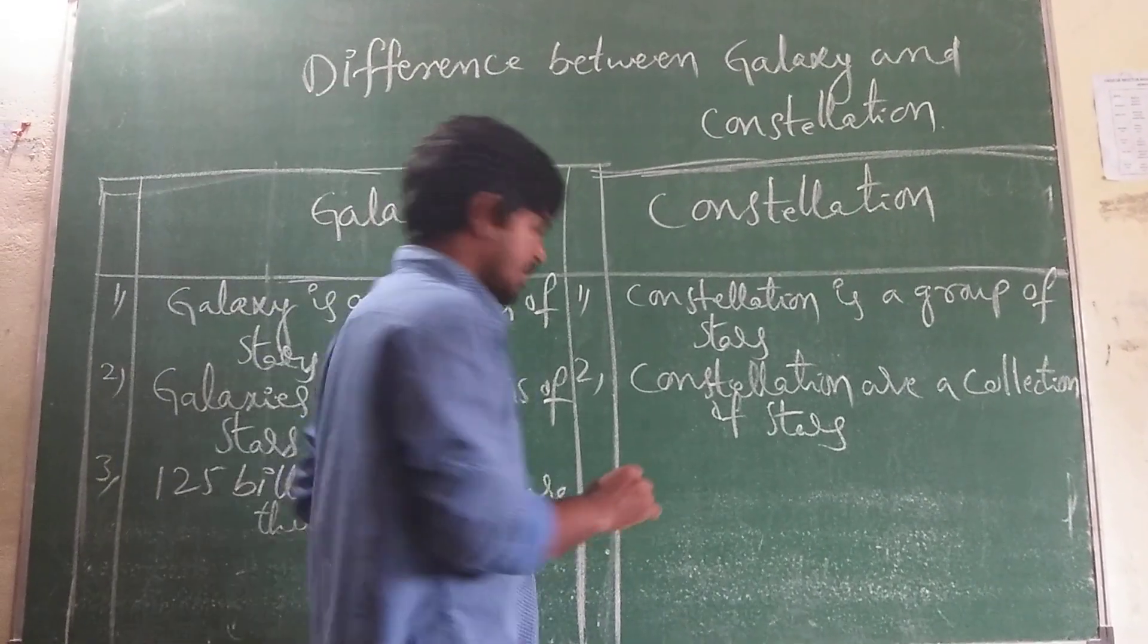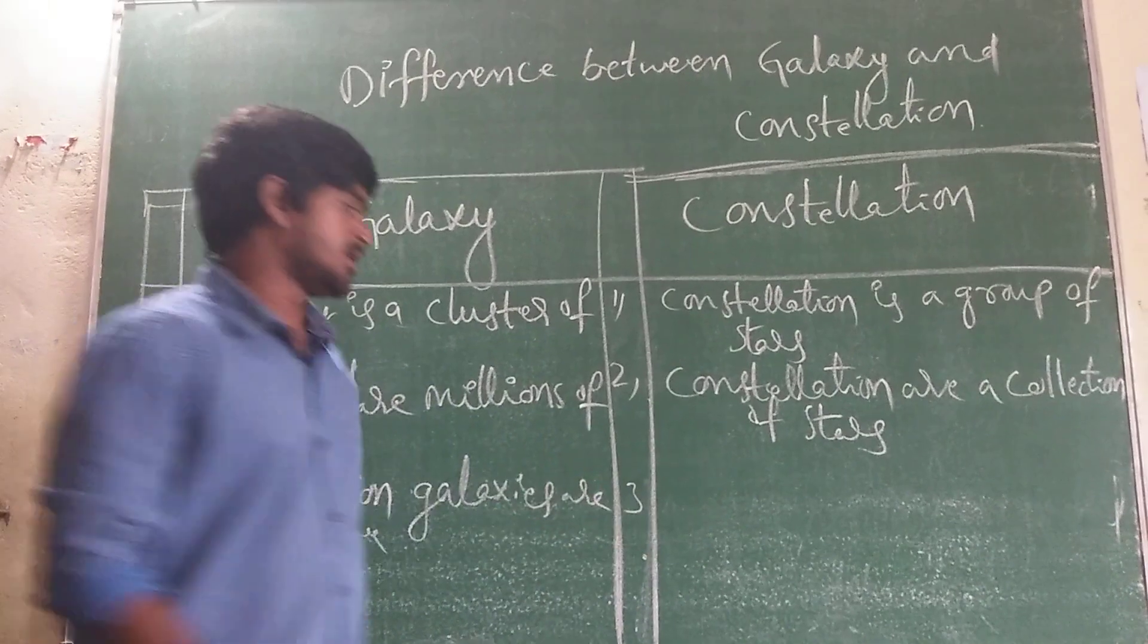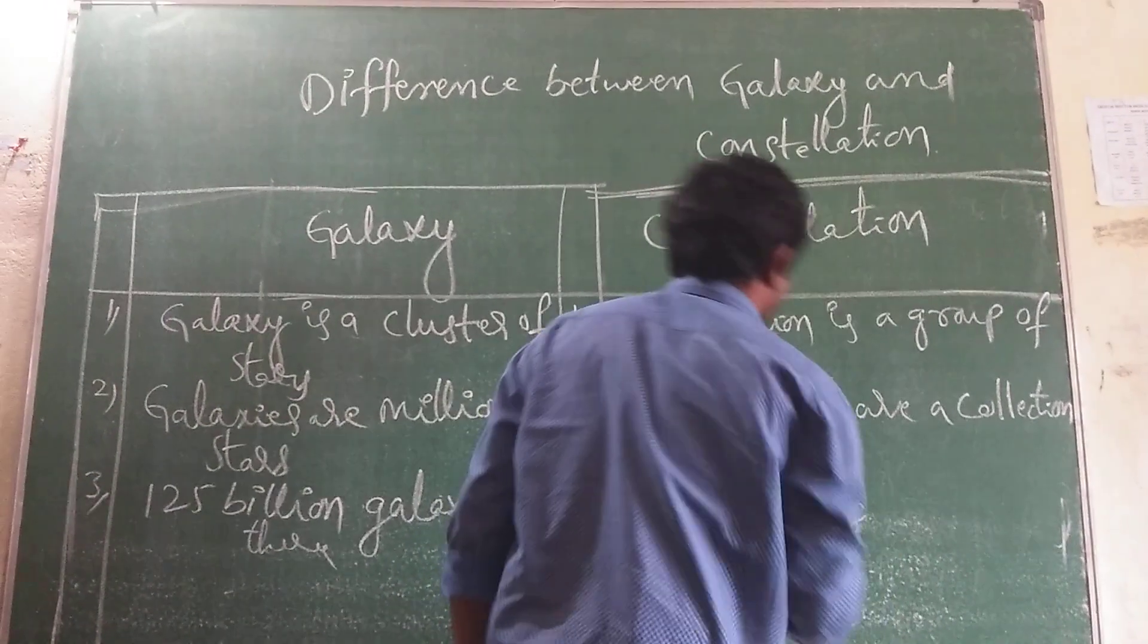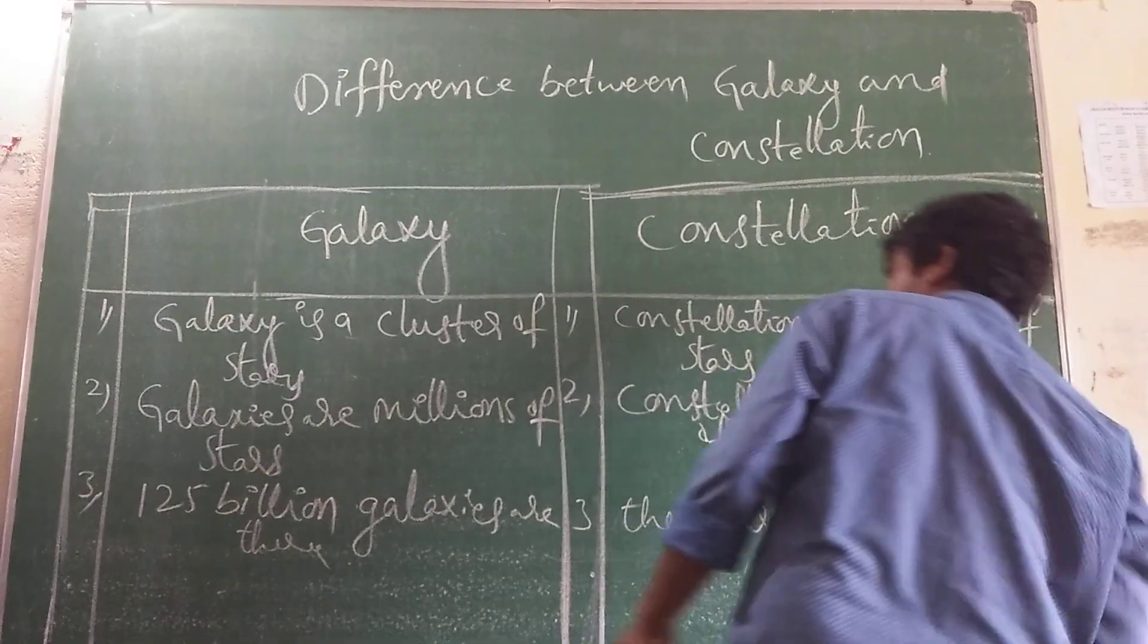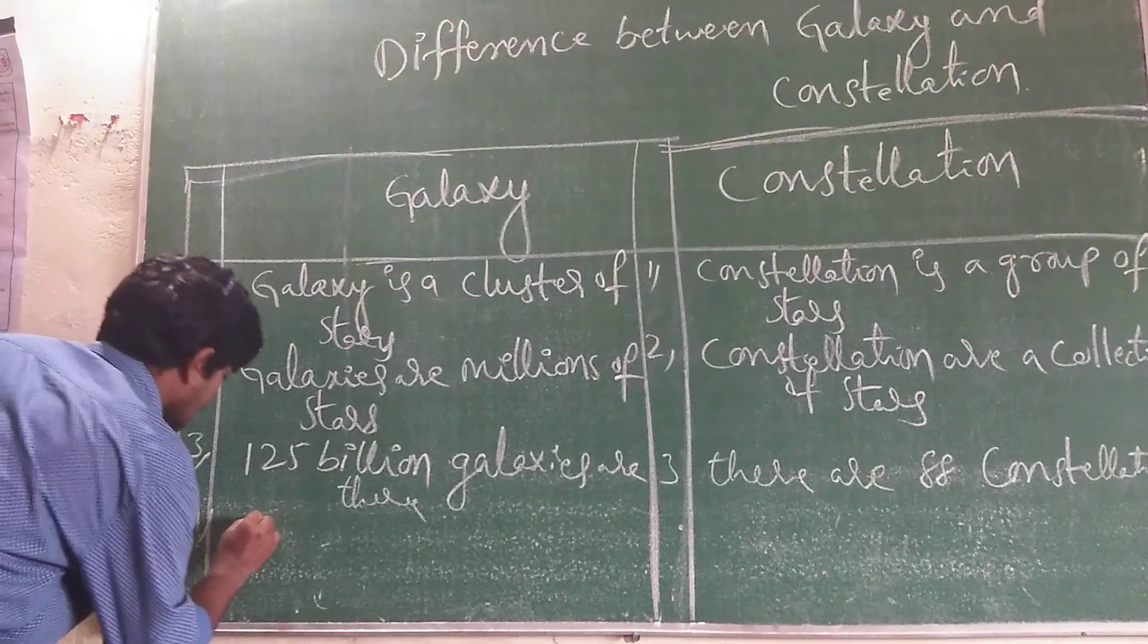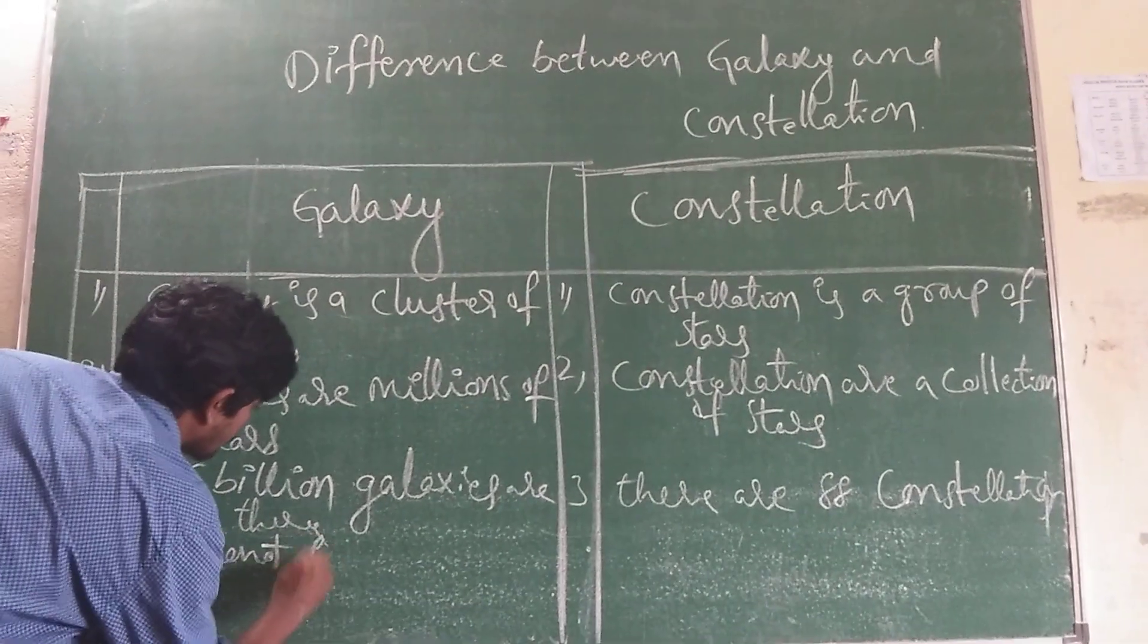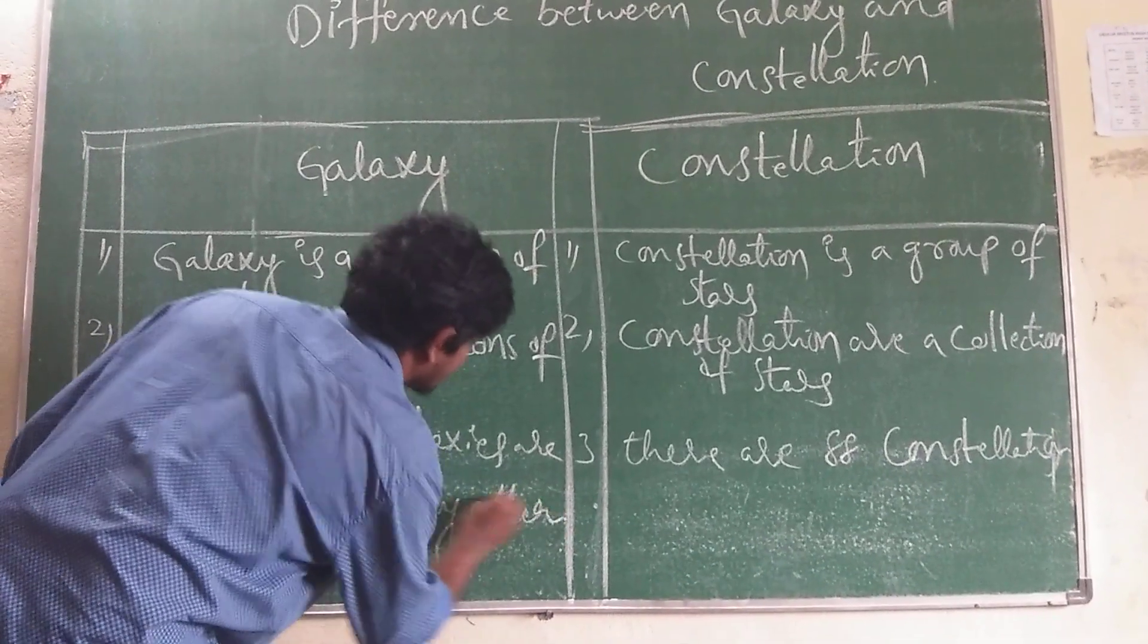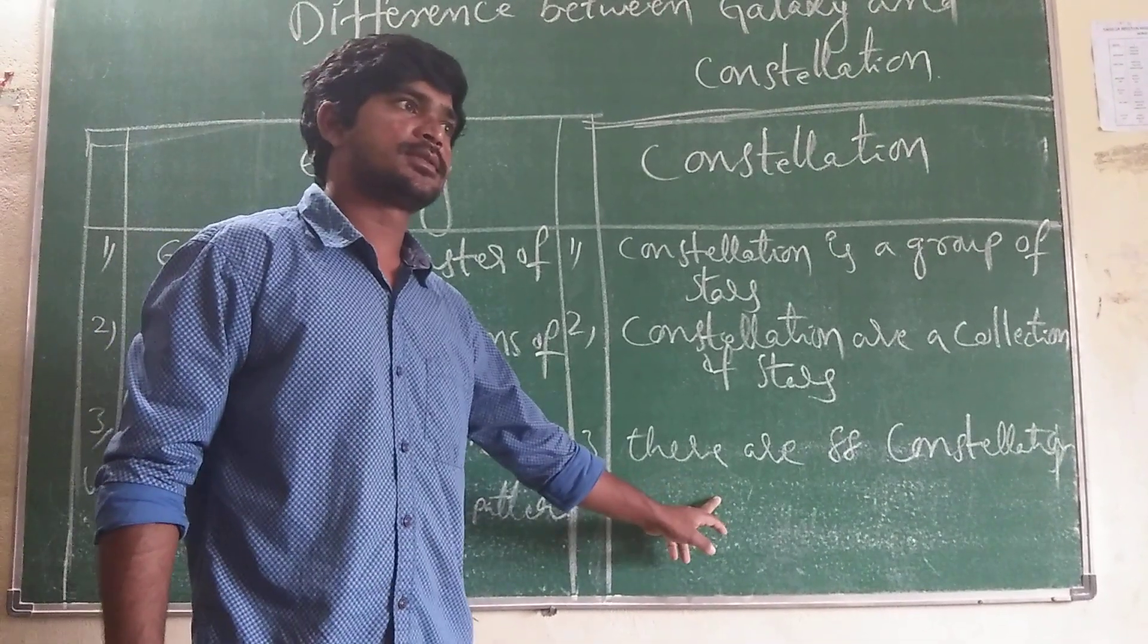There are only 88 constellations. Galaxies do not form any pattern. Constellations do form a pattern different like animals and creatures.